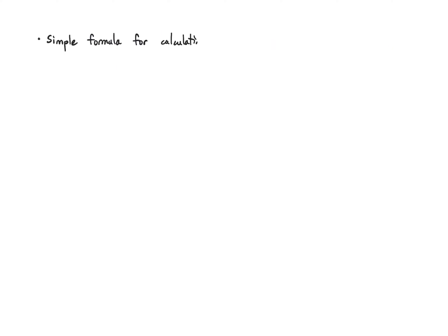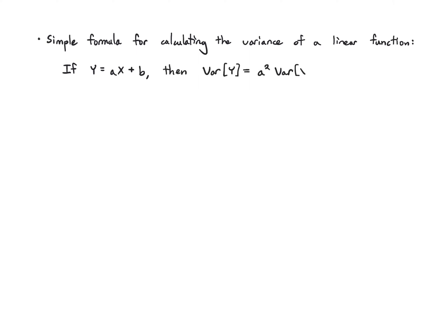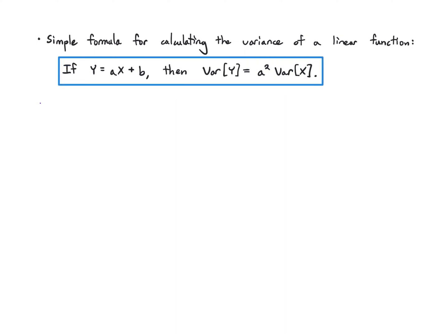Sometimes the variance is easy to calculate. If you're interested in the variance of a linear function — say y equals ax plus b — and you know the variance of x, then the variance of y is just a squared times the variance of x. Intuitively, the variance does not care about shifting the random variable, so b doesn't appear in the formula. When you scale by a, that scaling gets squared too, so a becomes a squared.